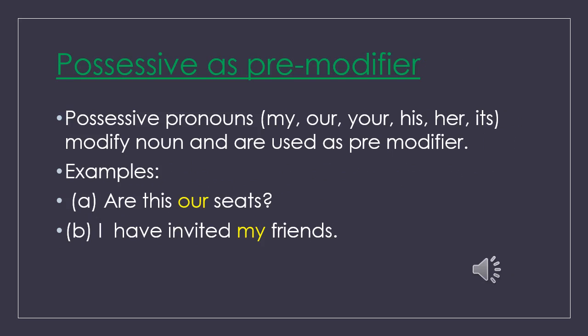Dear students, now we will go to the next slide. Possessive as premodifier. Possessive pronouns — my, our, your, his, her, its — modify nouns and are used as premodifier. Example A: 'Are these our seats?' Example B: 'I have invited my friends.' Here, 'our' and 'my' are used as premodifiers of 'seats' and 'friends.' We have to use the personal possessive pronouns according to the demand of the question.